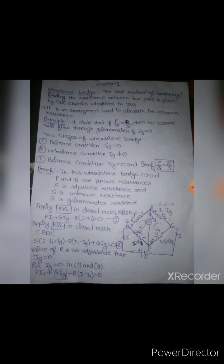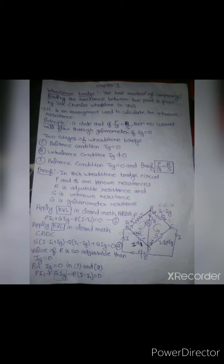There are two stages of Wheatstone Bridge: first balanced condition, second unbalanced condition. Balanced condition means I_g equals zero, unbalanced condition means I_g not equal to zero.